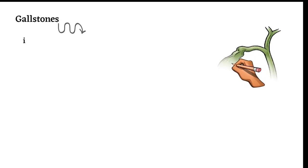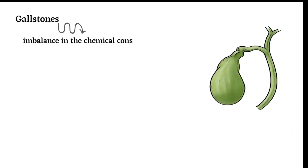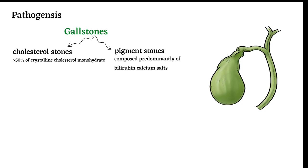Gallstones occur when there is an imbalance in the chemical constituents of bile that results in precipitation of one or more components. There are two general classes of gallstones: cholesterol stones containing more than 50% crystalline cholesterol monohydrate, and pigment stones composed predominantly of bilirubin calcium salts, each with different risk factors.